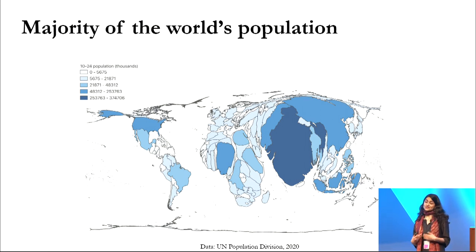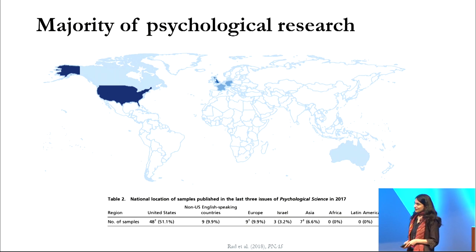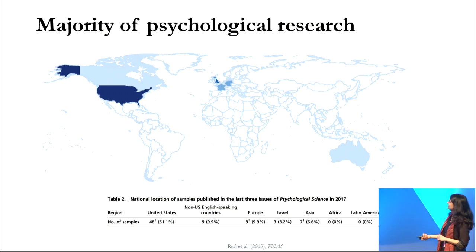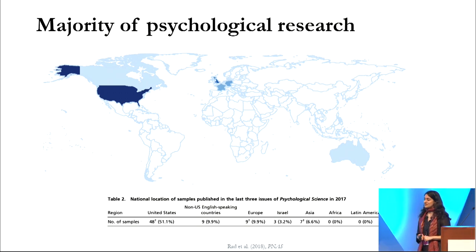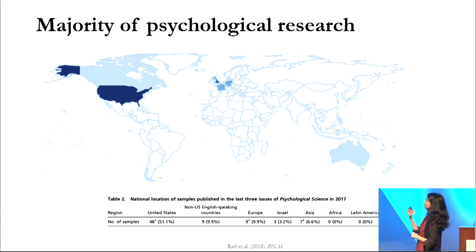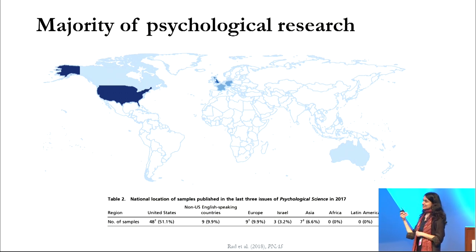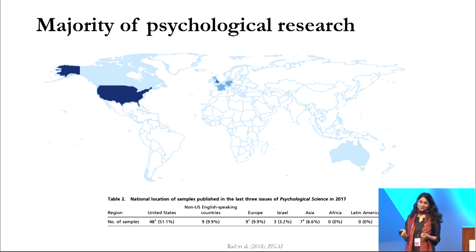Naturally, this suggests that most of the world's population sits outside the western pockets. However, majority of behavioral science research and specifically psychological research sits within the western pockets, and is particularly skewed towards the U.S. This is work from about five years ago by Muhammad Raad and colleagues, who show in one of the most premium journals in psychological science that almost 70 to 80 percent of it comes from the U.K. and Europe. But what's really interesting is we also have an interesting 23 percent where we don't really know where the samples come from.